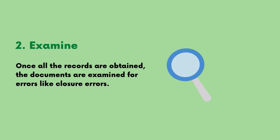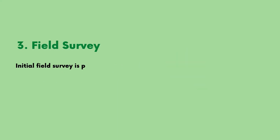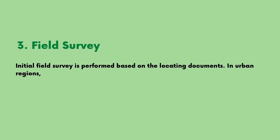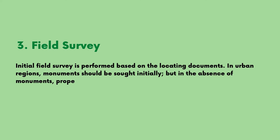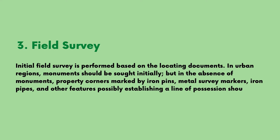Stage 3: Field Survey. Initial field survey is performed based on the locating documents. In urban regions, monuments should be sought initially, but in the absence of monuments, property corners marked by iron pins, metal survey markers, iron pipes, and other features — possibly establishing a line of position — should be located.